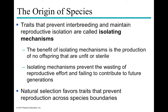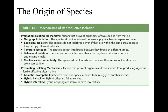Natural selection helps to favor traits that prevent reproduction across species boundaries, which helps maintain reproductive isolation. There are two major categories of isolating mechanisms. The first are pre-mating isolating mechanisms — these prevent two organisms from different species from physically mating, and include geographic isolation, ecological isolation, and others. Additionally, we have post-mating isolating mechanisms, which prevent the organisms from producing viable offspring even after mating has occurred.